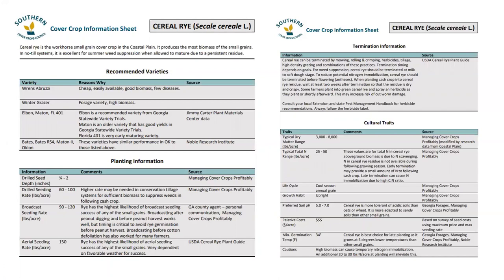This is an example of the types of information sheets we have — in this case the sheet for cereal rye. You can see information about specific varieties, planting information including depth and seeding rates, how to terminate that cover crop, and some specific traits such as relative cost and the typical amount of biomass it produces, as well as specific cautions you may need to follow. These are an excellent resource for finding out whether a specific cover crop will provide the benefits you're trying to achieve on your farm.